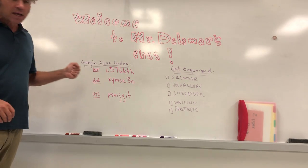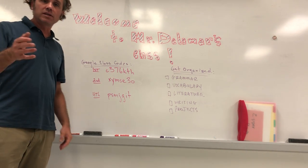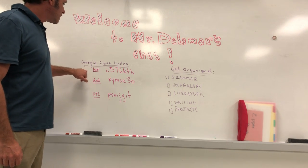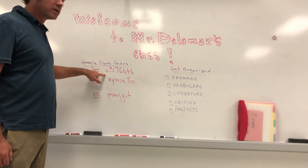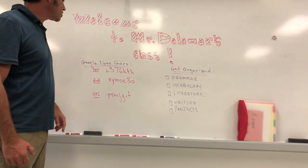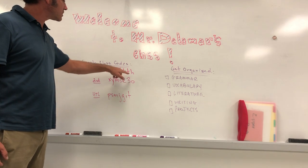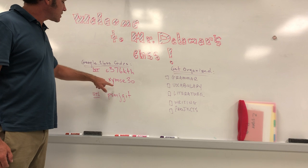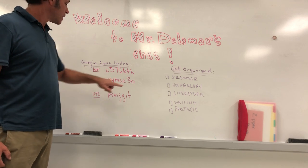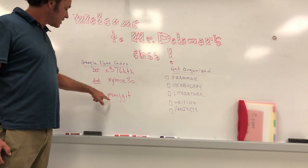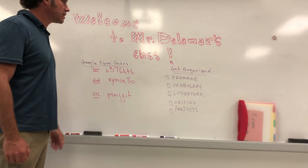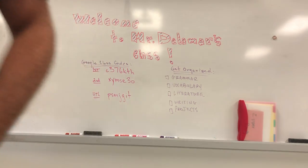Just to point out: if you didn't get your syllabus and you're wondering how to get into the classroom codes, I have them here. First period is C376KTH — all lowercase letters. Second period is XYMS E30. Fourth period is P-as-in-Paul SMJGIT — again all lowercase letters. Let me just make sure that you can see that.